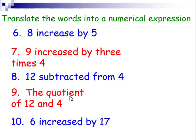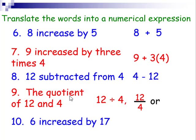You may want to pause it again and see if you can get these five now. Eight increased by five, that would be eight plus five. Nine increased by three times four, that would be nine plus three times four. Twelve subtracted from four, that would be four minus twelve. The quotient of twelve and four, we can write it as twelve divided by four like so. We can write it as a ratio. The preferred way would be like this. Remember, the division sign is just a ratio of two numbers, a fraction, where the numerator and denominator replaced by two dots. Where the twelve is your numerator, that's the dot on the top, and the four is the denominator, that's the dot on the bottom. Six increased by 17, that would just simply be six plus 17.